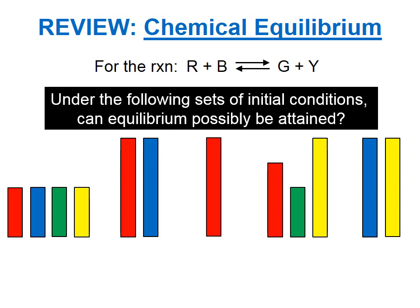Under the following sets of initial conditions, can equilibrium possibly be attained? At equilibrium, we are going to have some amount of each of the substances: some red, some blue, some green, some yellow.